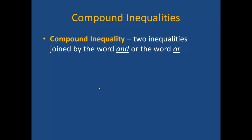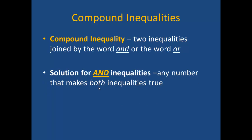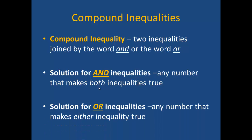There's one more type of inequality to discuss — these are called compound inequalities. These occur when two inequalities are joined by the word AND or the word OR. A solution for AND inequalities is any number that makes both inequalities true, and the solution for OR inequalities is any number that makes either inequality true.